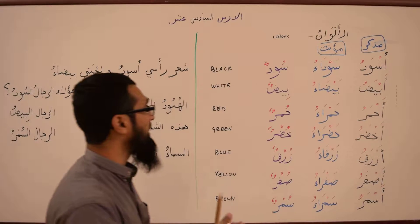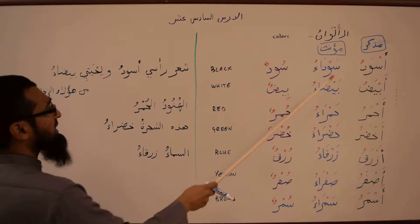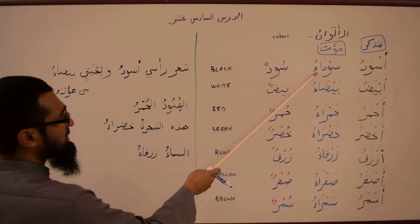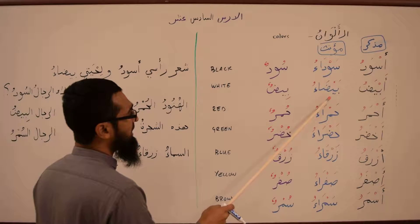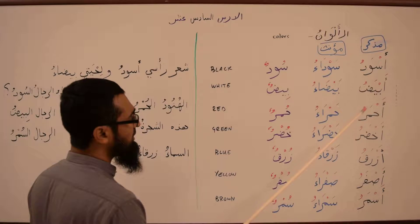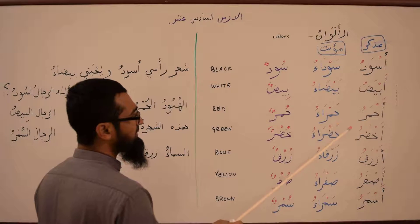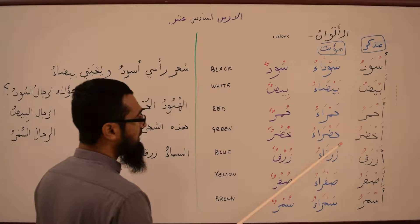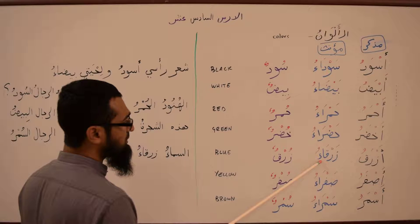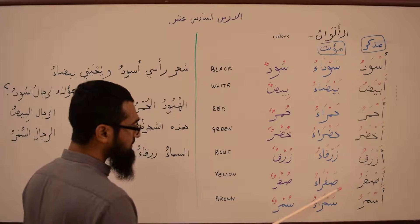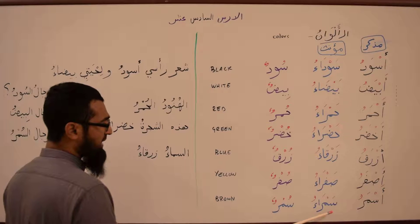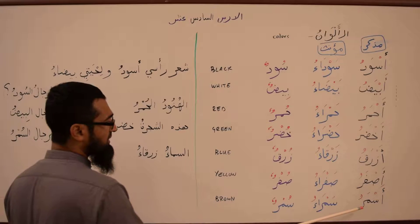The muanath form is a little bit different. So Da'u is the feminine of Aswad. Bayda'u is the feminine of Abiyad. Hamra'u is the feminine of Ahmar. Khadra'u is the feminine of Akhdar. Zarka'u is the feminine of Azraq. Safra'u is the feminine of Asfar. And Samra'u is the feminine of Asmar.